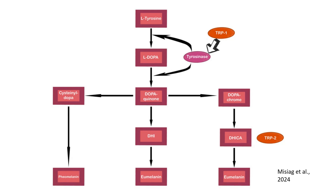In the presence of cysteine, dopaquinone reacts with cysteine to form cysteinyldopa, which eventually leads to the synthesis of pheomelanin. Pheomelanin is lighter in color but less effective at protecting against UV damage.